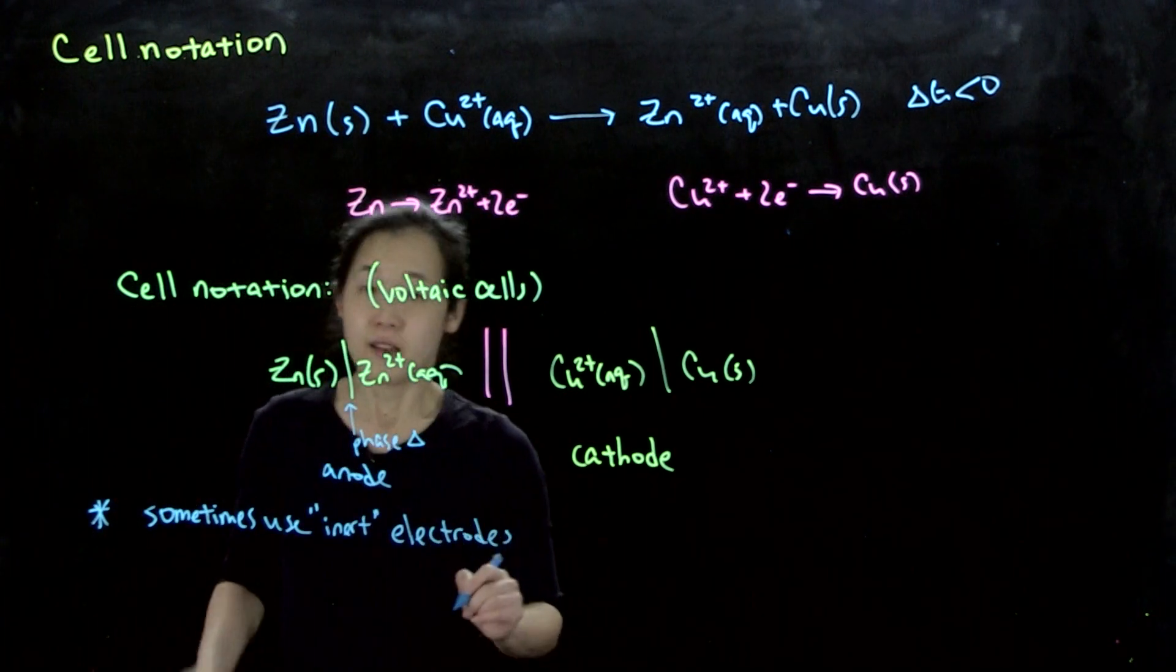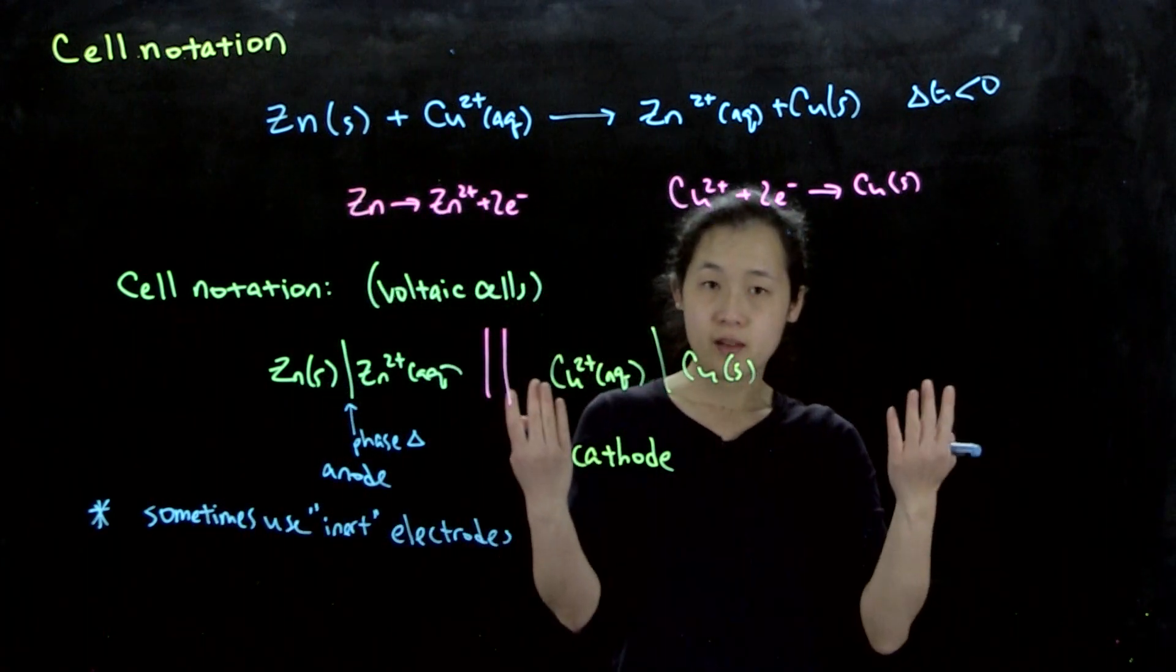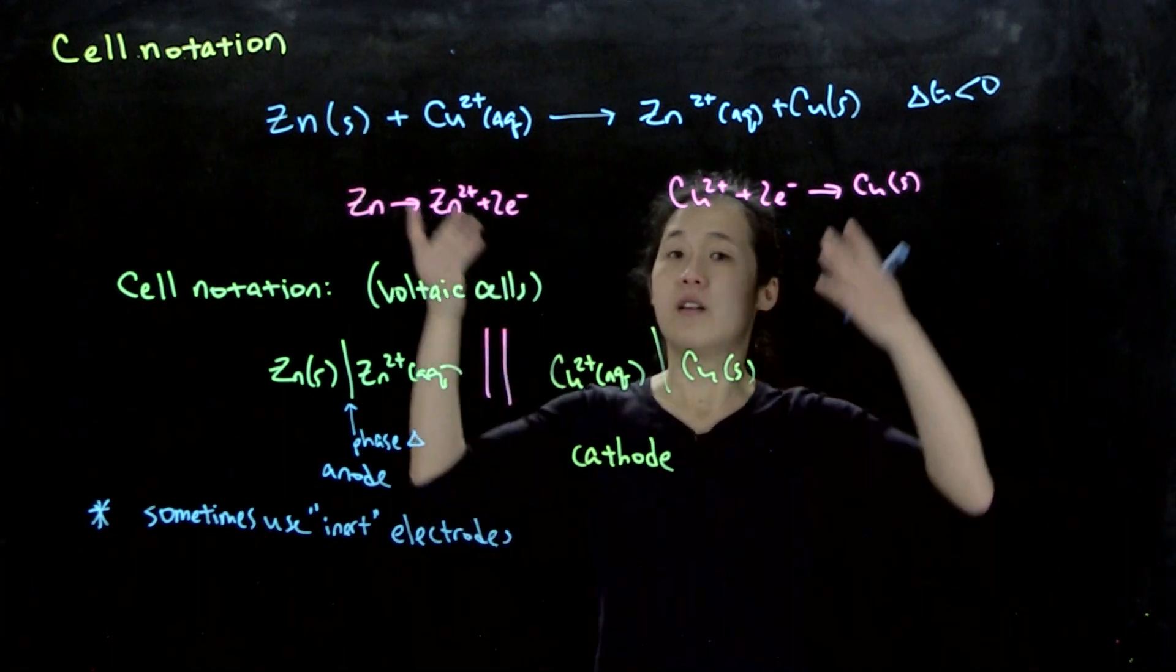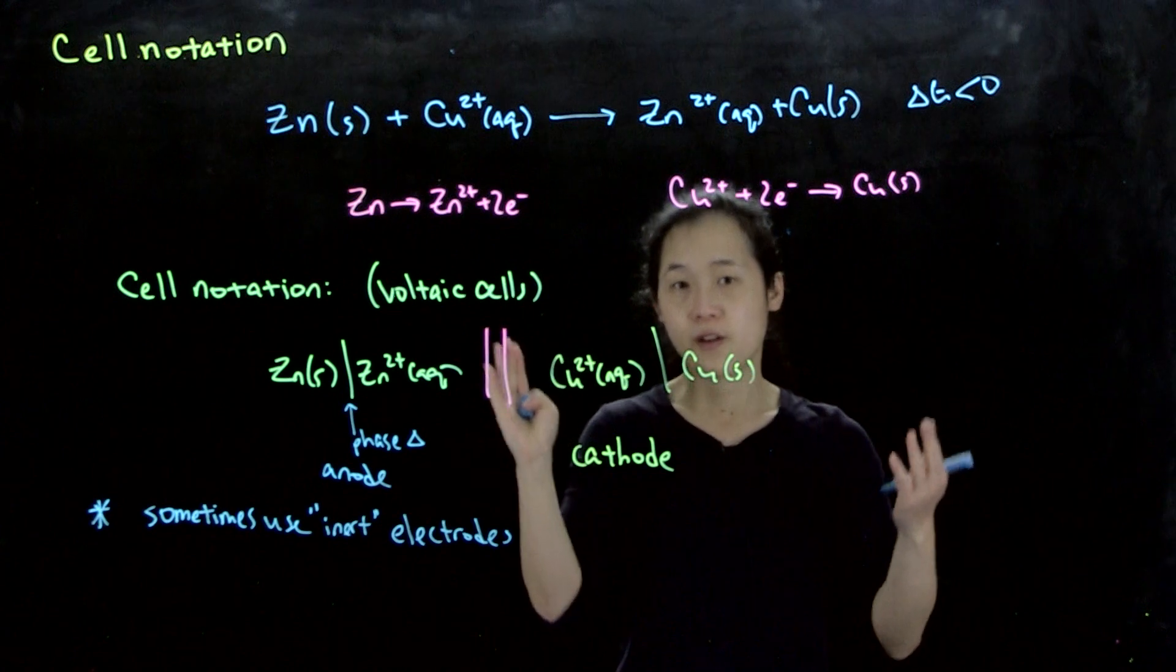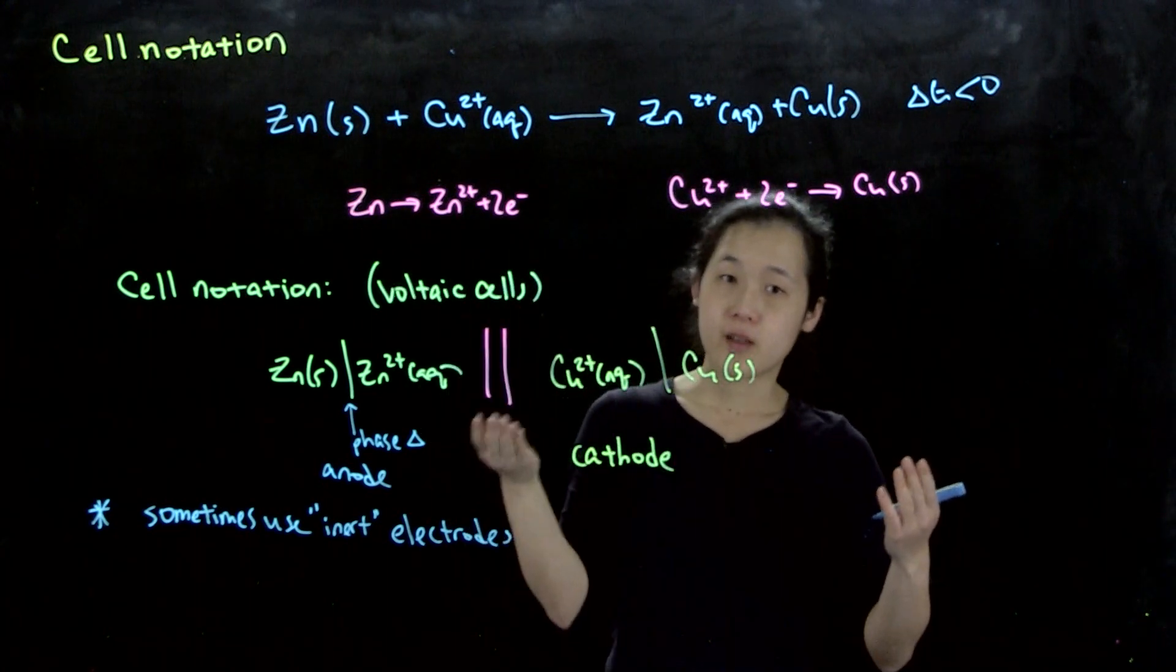sometimes use inert electrodes. By inert electrodes, I mean electrodes that you hook up to the wire to conduct electricity, but they're not actually participating in a redox reaction. Their only purpose is to transfer electrons to and from the reagents you're oxidizing or reducing.